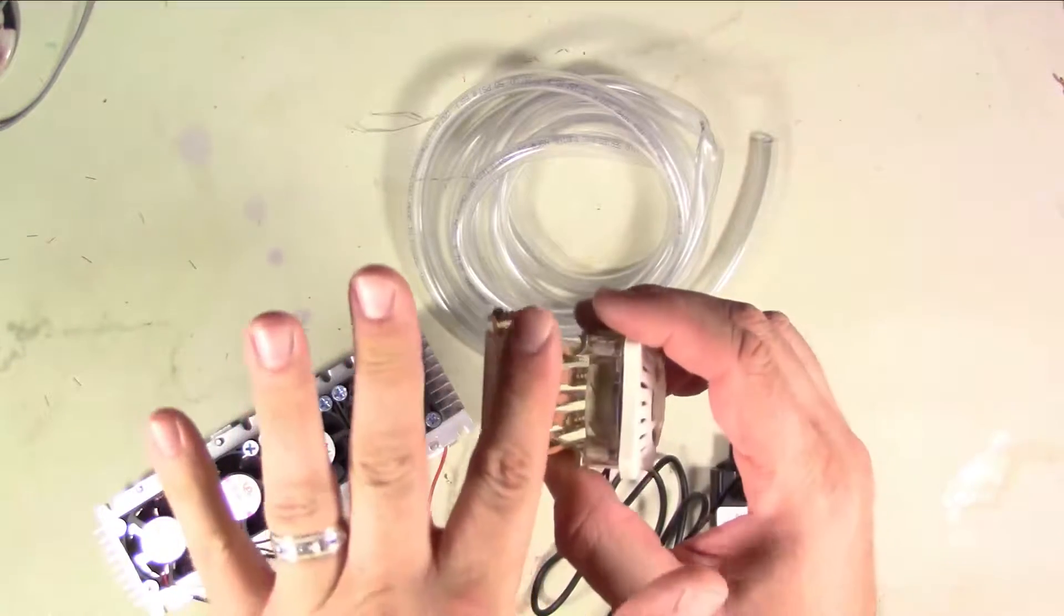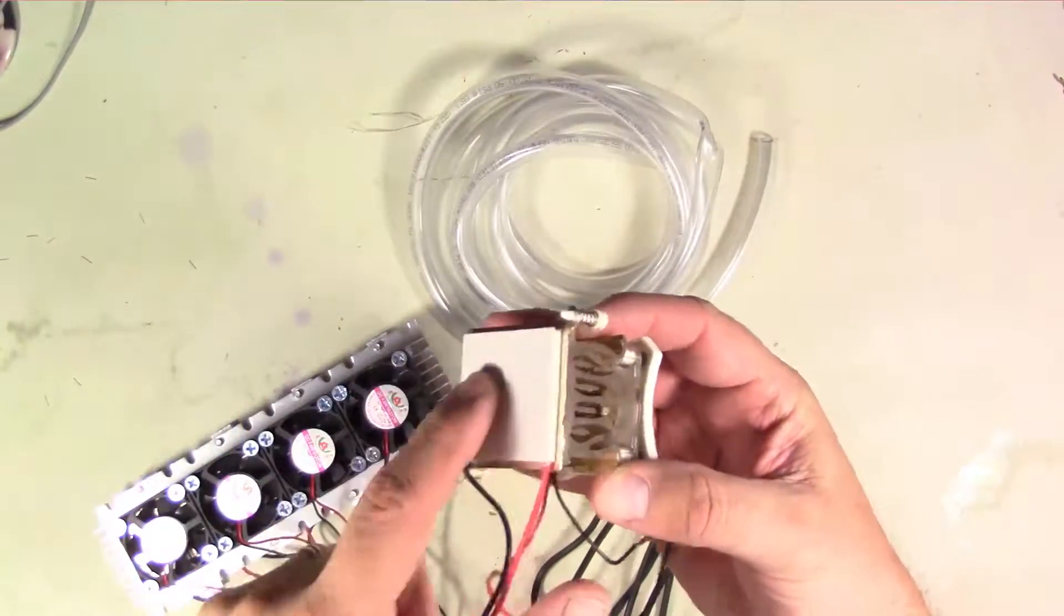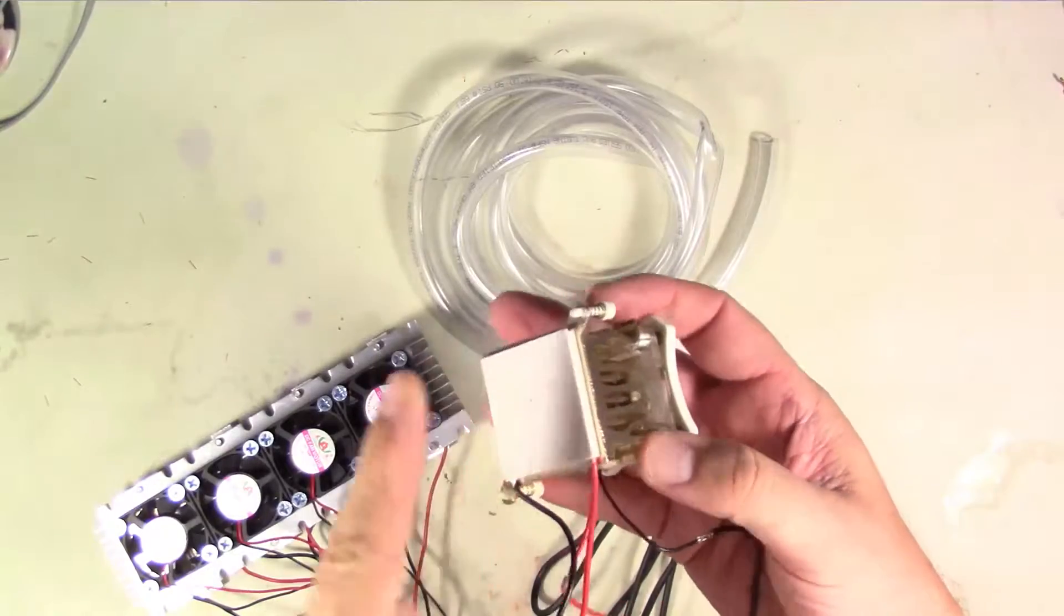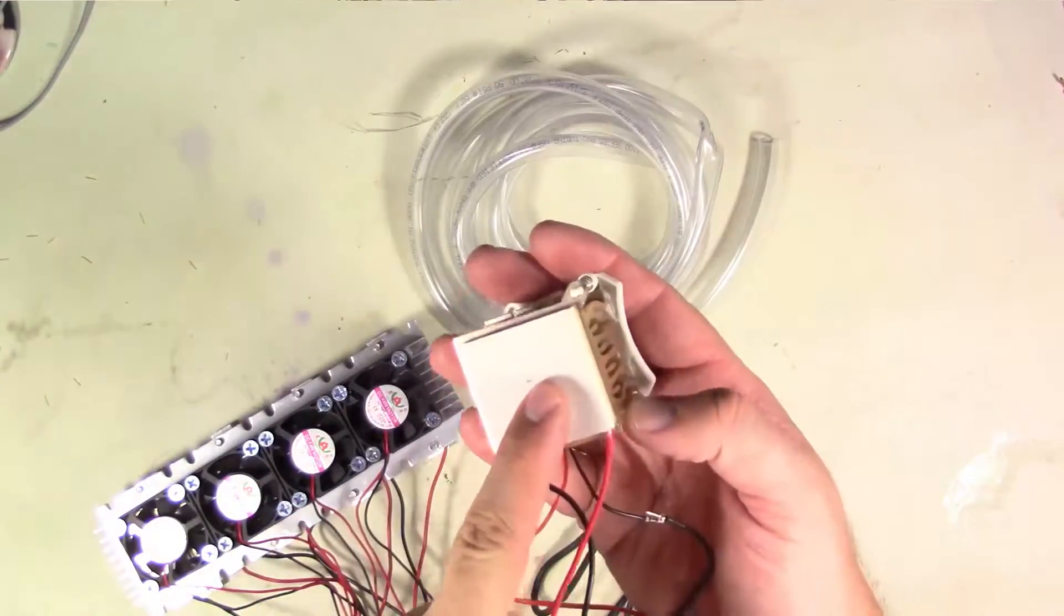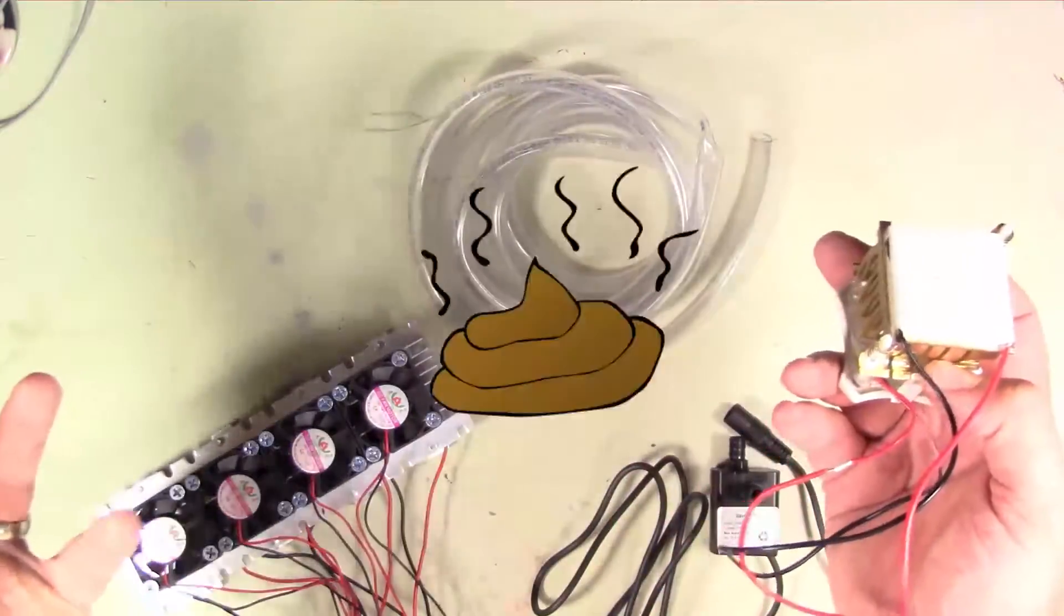And so if you put a heat sink on it and you get the heat away from that hot side of that plate, this side will get extremely cold. I mean, you can freeze water with this thing. It's amazing.